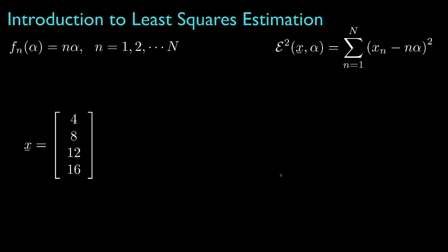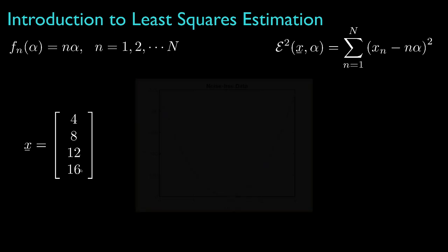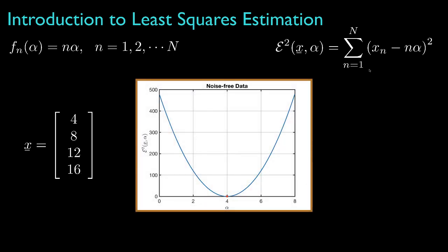As an example, suppose that the observation vector has the values 4, 8, 12, and 16. With a little thought, you can probably see that the value for alpha is 4. The first element is 4, which is 4 times 1; the second would be 4 times 2, or 8; the third is 4 times 3, or 12; and the fourth is 4 times 4, or 16. By plotting the squared error as a function of alpha for this particular observation, we can see that the squared error is minimized for the value of alpha equal to 4. And since we're getting a perfect fit, the squared error at this point is equal to 0. We'd say then that 4 is the least squares estimate for alpha based on this particular observation.